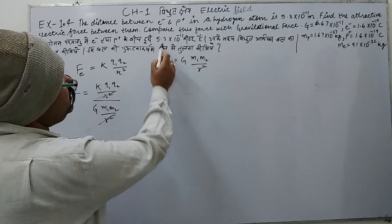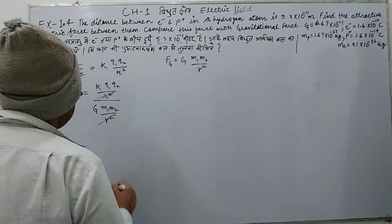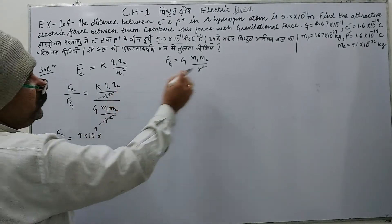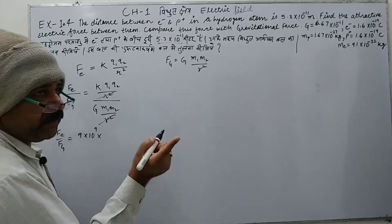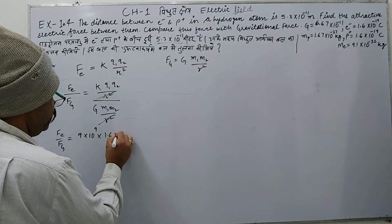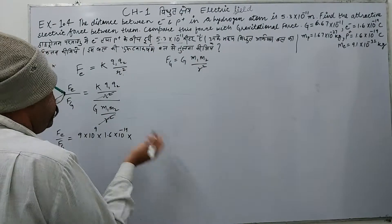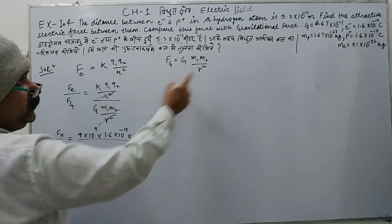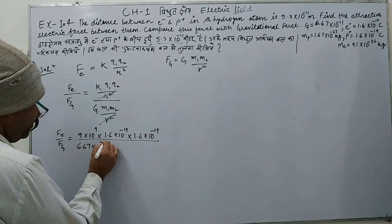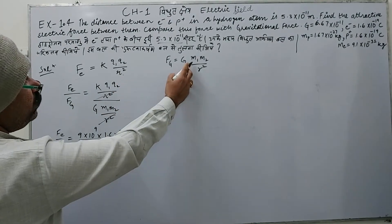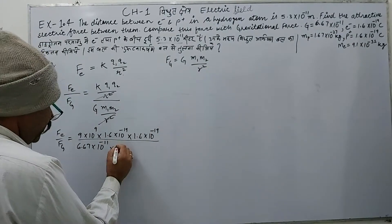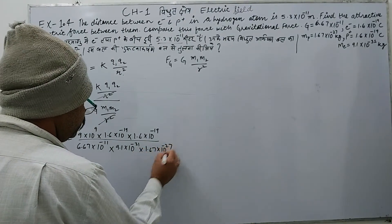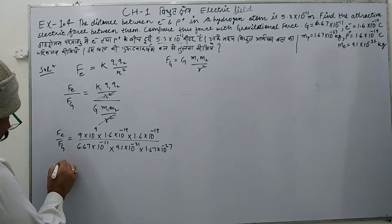Since R² is the same in both, it cancels out. So Fe/Fg equals K times Q1Q2 divided by G times M1M2. Substituting: K = 9 × 10⁹, the charge on electron and proton is 1.6 × 10⁻¹⁹ each, G = 6.67 × 10⁻¹¹, and the masses of electron and proton are substituted accordingly to compute the ratio.